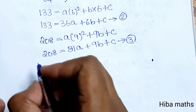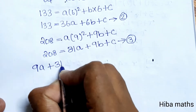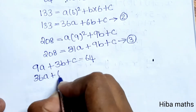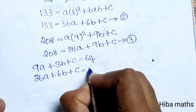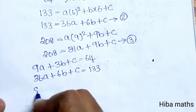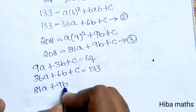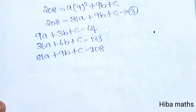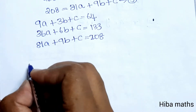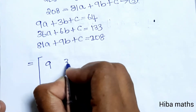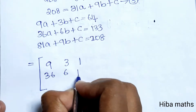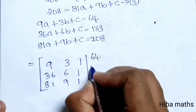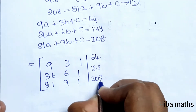So the three equations are: 9a + 3b + c = 64, 36a + 6b + c = 133, and 81a + 9b + c = 208. Now we write the augmented matrix. The augmented matrix is: row 1: [9, 3, 1 | 64], row 2: [36, 6, 1 | 133], row 3: [81, 9, 1 | 208].